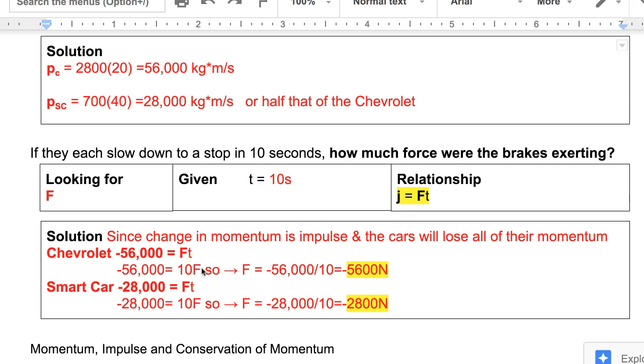For the Chevrolet, it loses all its momentum, so its change in momentum is negative 56,000 kilogram meters per second. Set that equal to 10 times F, so the force would equal negative 5,600 newtons. Whereas the smart car loses 28,000 kilogram meters per second of momentum. Set that equal to the impulse, or force times time, 10F. So we get that the force is negative 2,800 newtons, or half the force that it took to stop the Chevrolet.